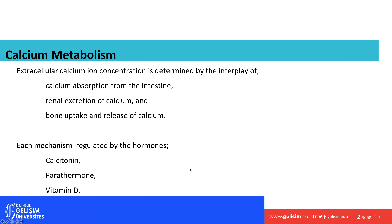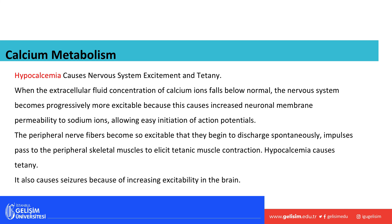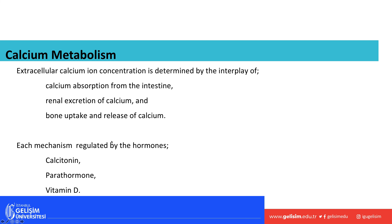Extracellular calcium ion concentration is determined by the interplay of calcium absorption from the intestines, renal excretion of calcium by the kidneys, and calcium absorbed or released by bone. These mechanisms are regulated by hormones — primarily calcitonin, parathyroid hormone, and vitamin D.